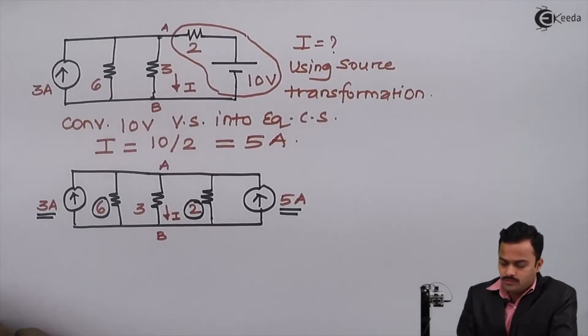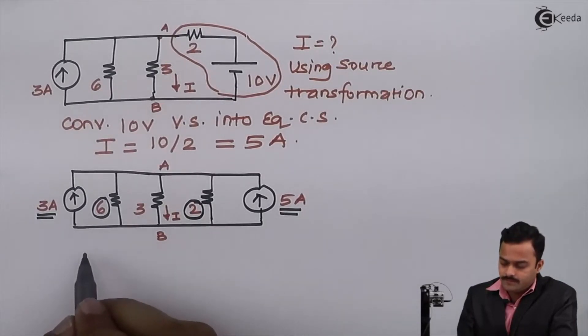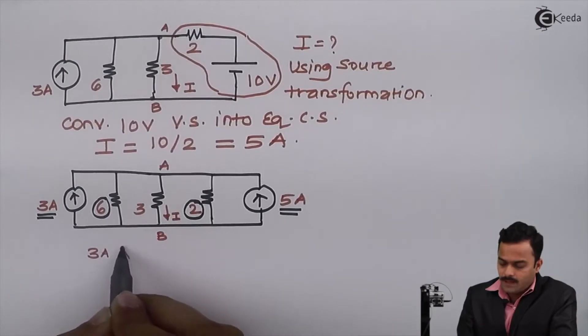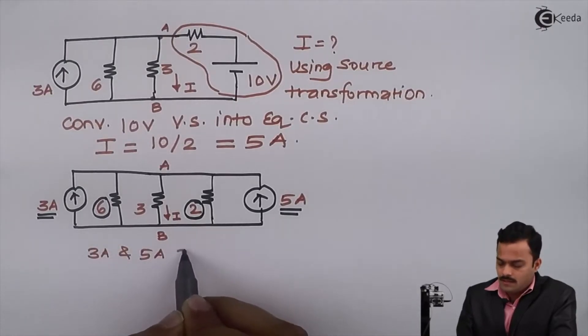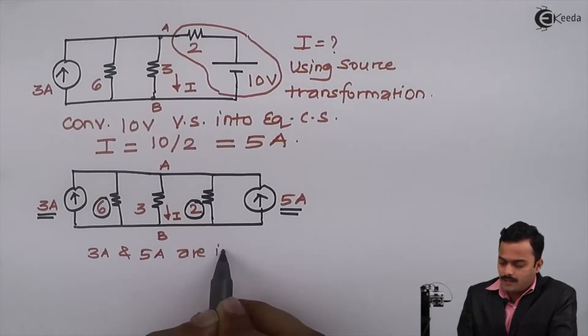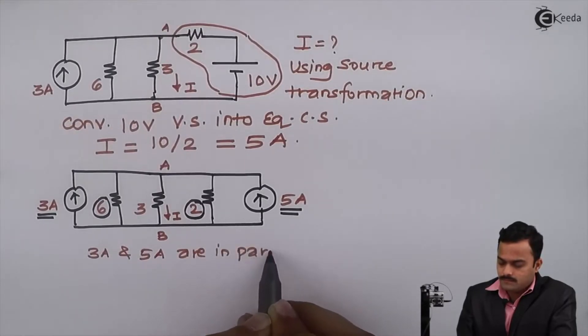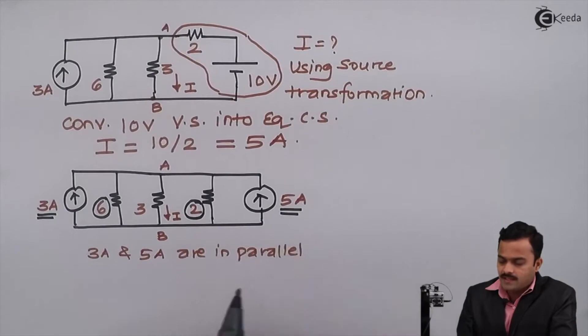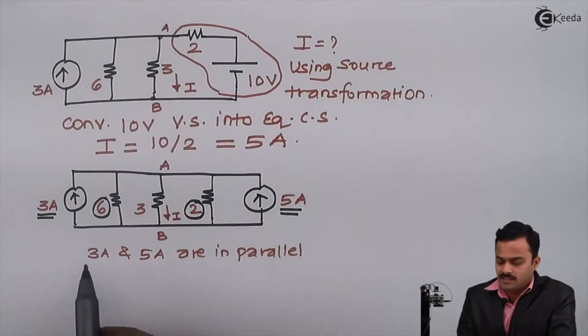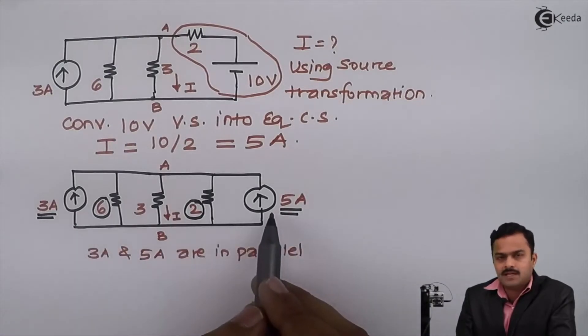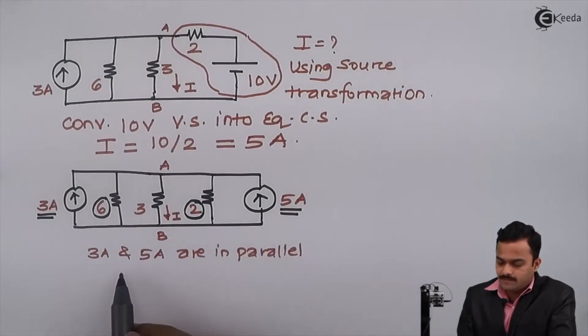3 ampere and 5 ampere are in parallel. We have seen that when two current sources are in parallel, you get addition or subtraction depending on their directions. Both current sources have the same direction, so the resultant current will be 3 plus 5, which is 8 ampere.